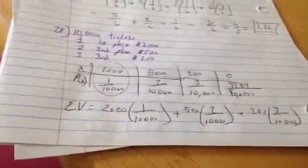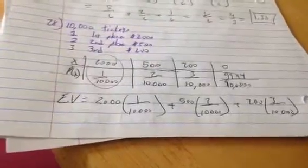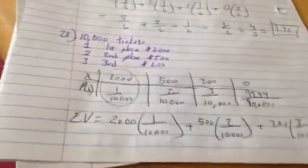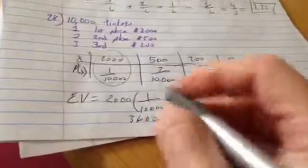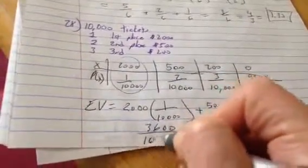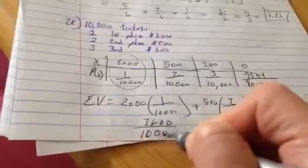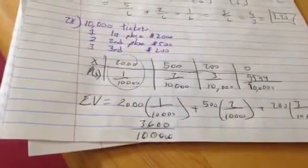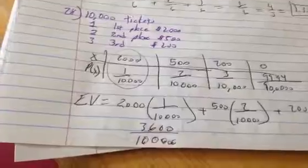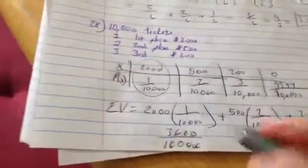so I'm basically going to add 2,000 plus 500 times 2, plus 200 times 3. And my top is going to be 3,600 divided by 10,000, and if I just divide that, 3,600 divided by 10,000, I'm going to get 0.36.